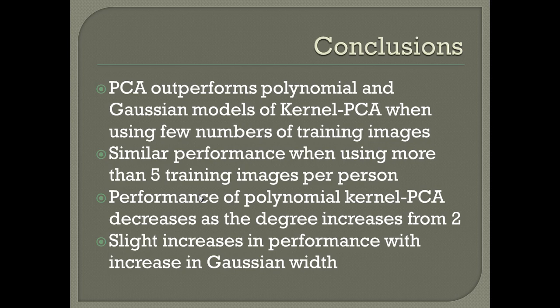To conclude the presentation: for a small number of training images — from 0 to 5 — linear PCA outperforms both the polynomial kernel PCA and the Gaussian kernel PCA. Linear PCA is the most efficient and simplest of the algorithms. If the training images are more than 5, both algorithms give almost similar performance. For polynomial kernel PCA, degree 2 gives the best performance compared to higher degrees. For Gaussian kernel PCA, performance increases for small values of Gaussian width, but after reaching the threshold, performance plateaus even as Gaussian width is further increased.